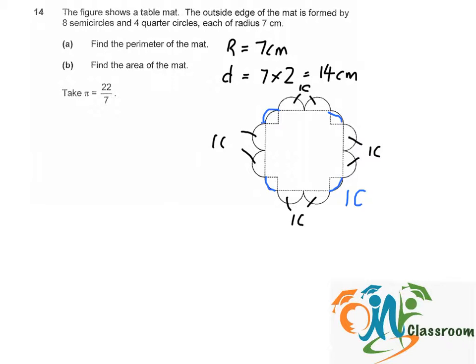Equals to pi times D. So there will be 22 over 7 times 14, equals to 44 cm.